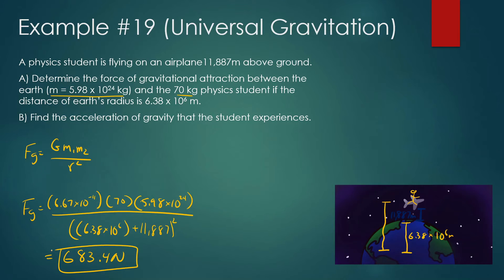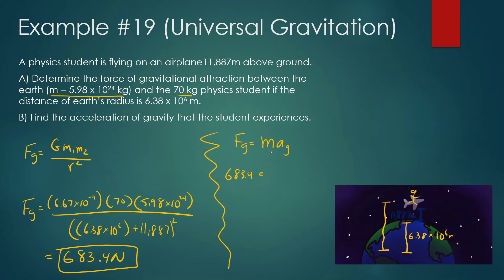When he was on Earth it was 685.9 N, so on the airplane it's 683.4 N — a little bit less. So if you're on an airplane you could jump a little higher because gravity isn't as strong. Part B asks for the acceleration of gravity the student experiences. Force of gravity equals mass times acceleration of gravity: 683.4 = 70 × g, so g = 683.4 / 70 ≈ 9.76 m/s². It's a little bit less than 9.8. The acceleration that the Earth experiences from this person would be extremely small.